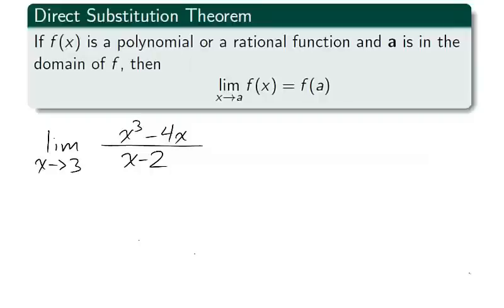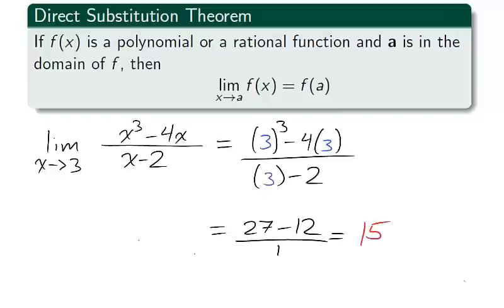Let's take an example. We could use our limit laws to calculate the limit, but since this function is rational and x minus 2 is non-zero when x equals 3, we can use direct substitution and plug the value 3 into x and obtain 15 for the limit as x approaches 3.